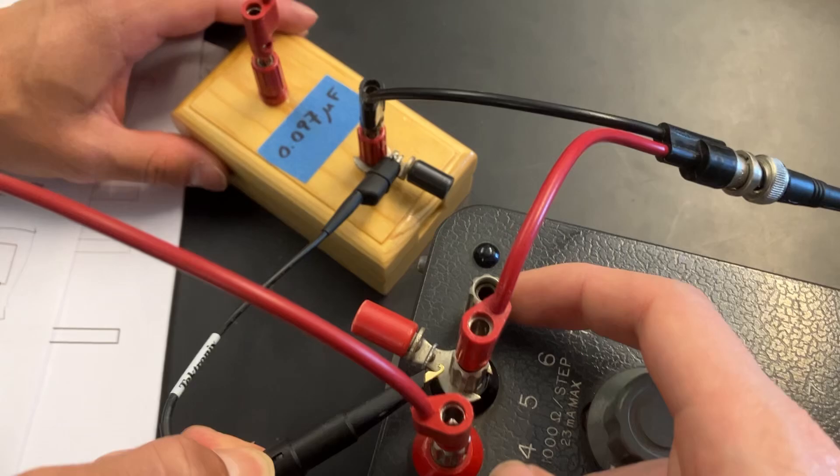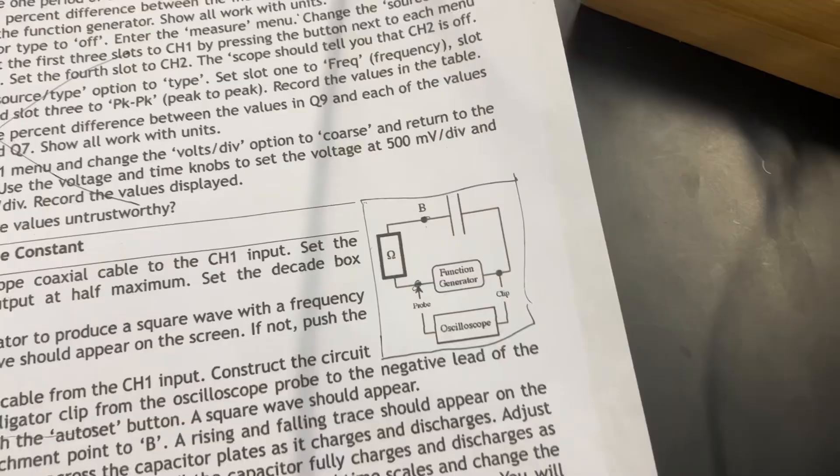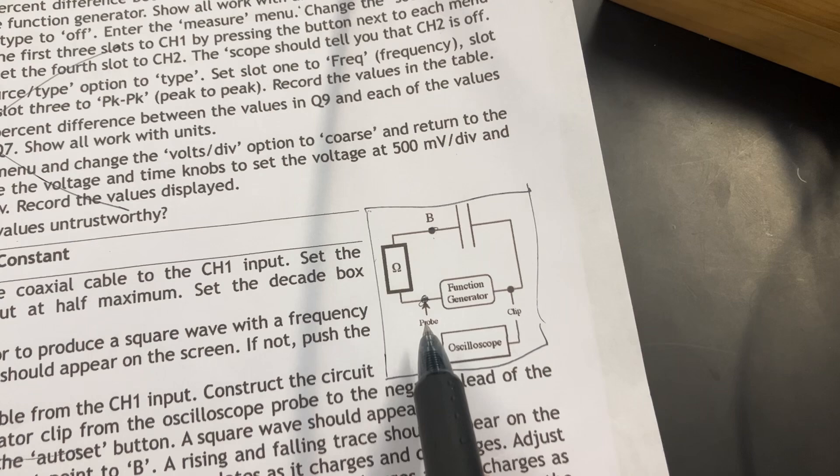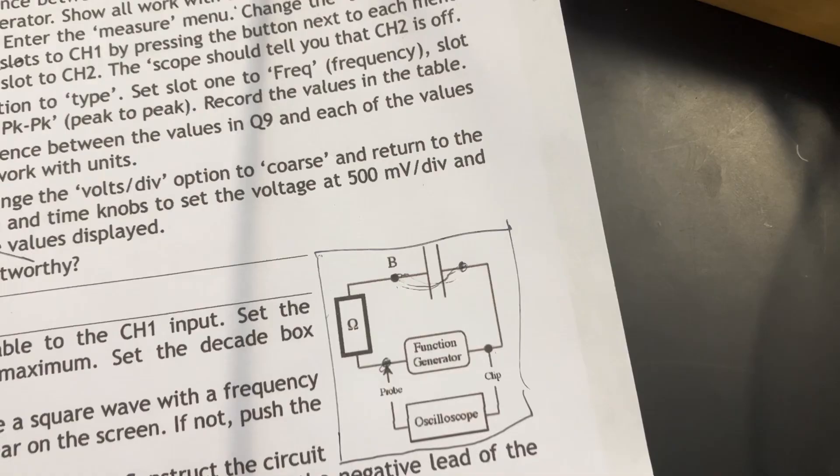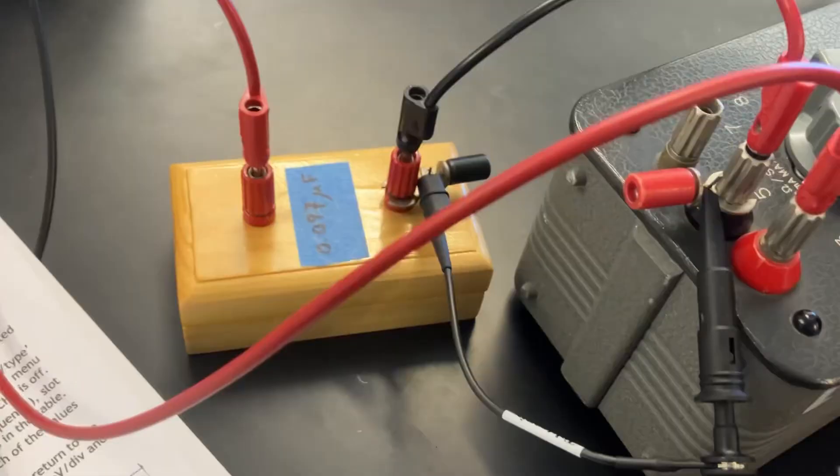At first the oscilloscope is measuring the function generator because the probe and clip are positioned to measure voltage changes across it. If we change the probe to this side, these two would be connected differently, so it would be measuring between these two points. Now we're going to measure the capacitor. We'll take this probe and move it to this clip over here.